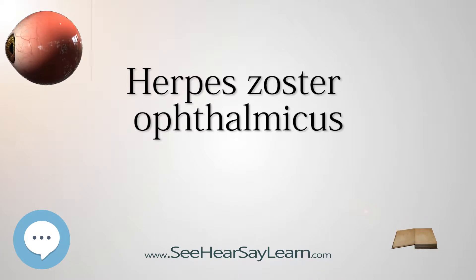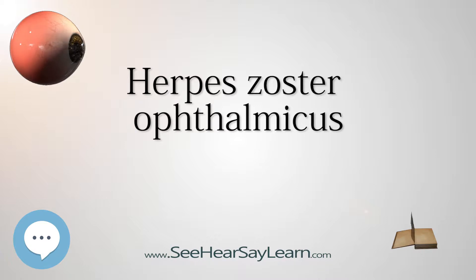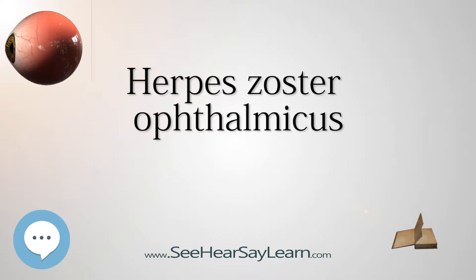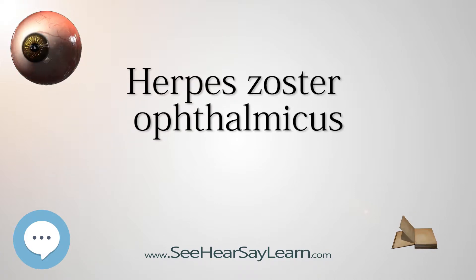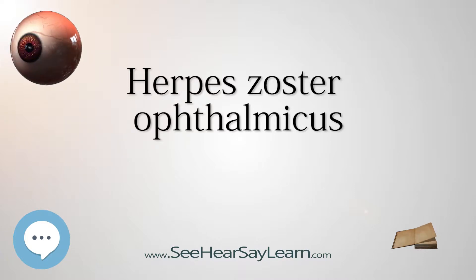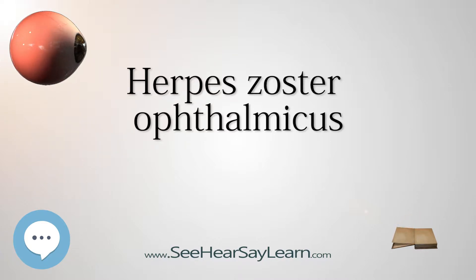Herpes Zoster Ophthalmicus is transmitted via direct contact or droplets. Varicella zoster virus is a DNA virus which produces acidophilic intranuclear inclusion bodies. The virus is neurotrophic in nature. The frontal nerve is more commonly affected than the nasociliary nerve or lacrimal nerve.